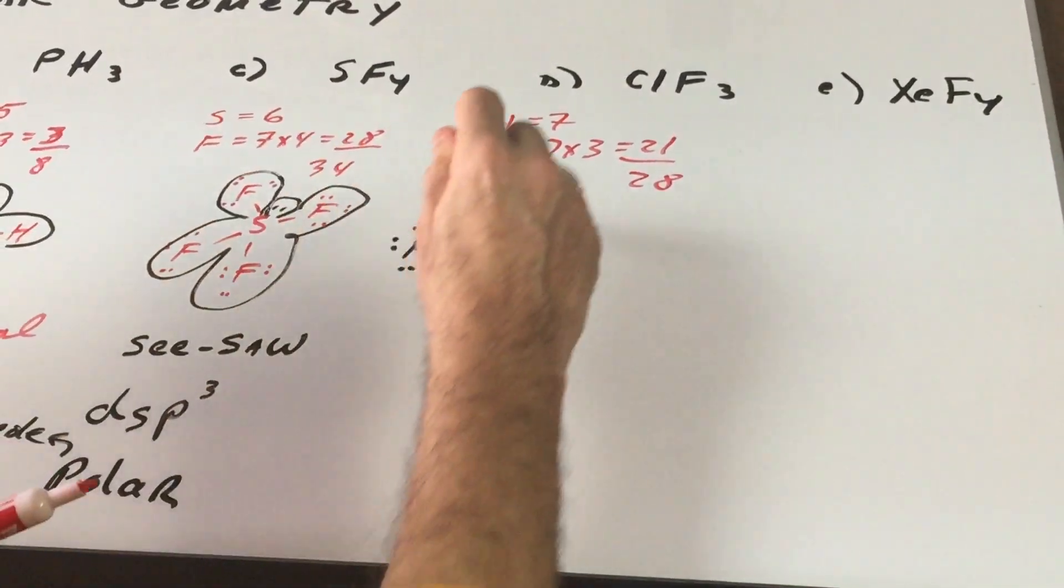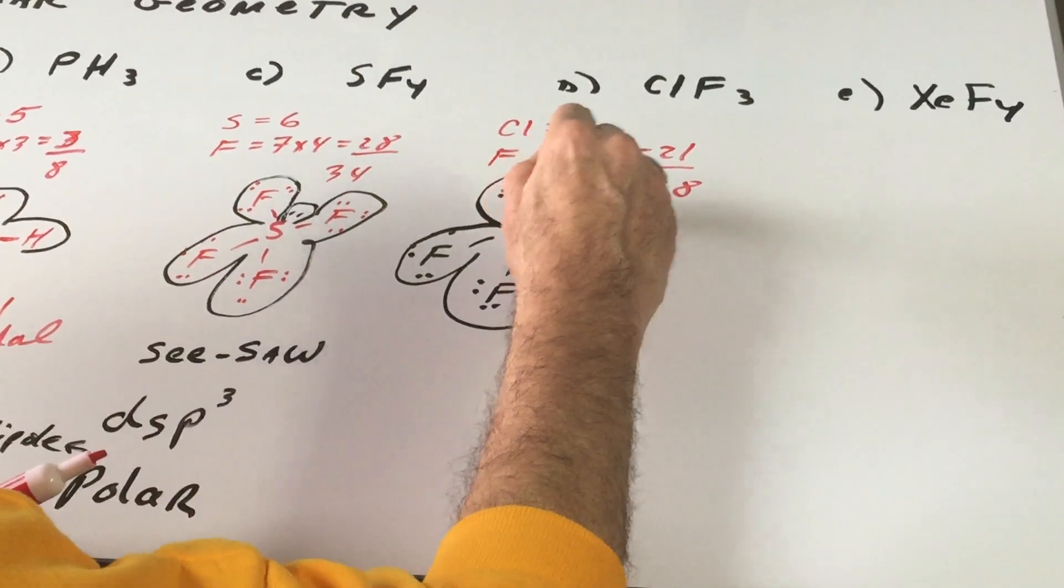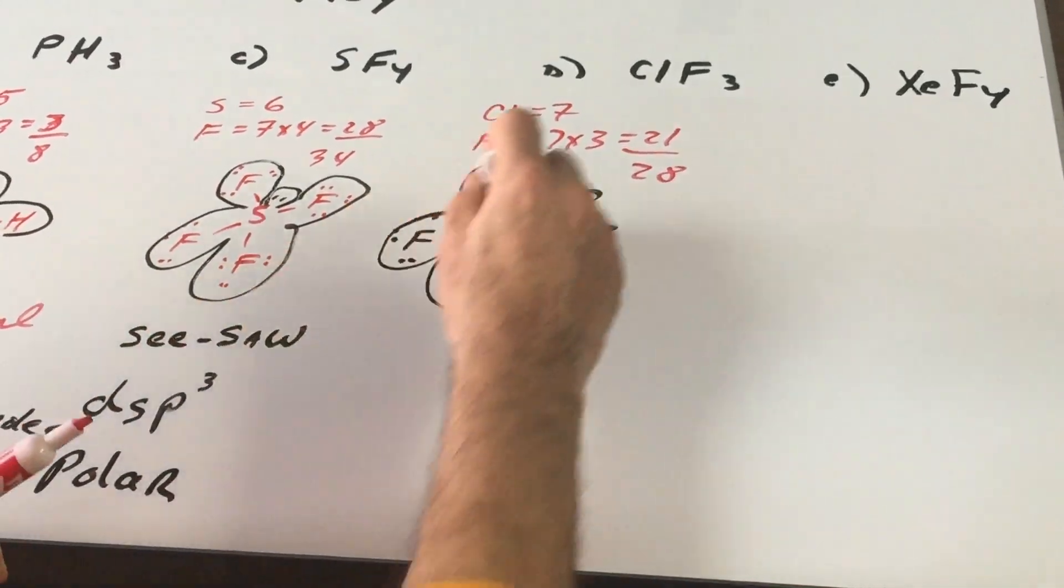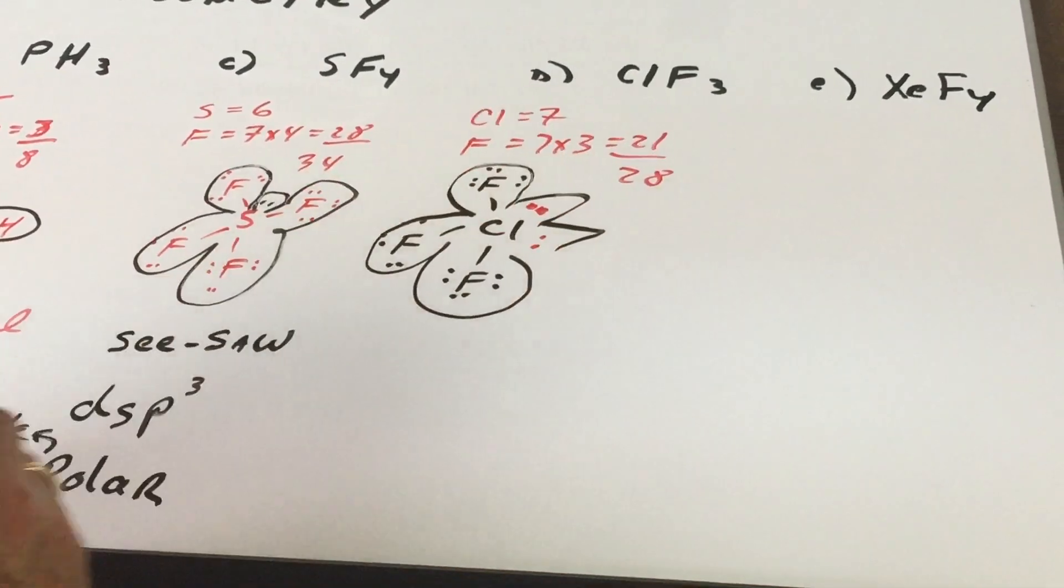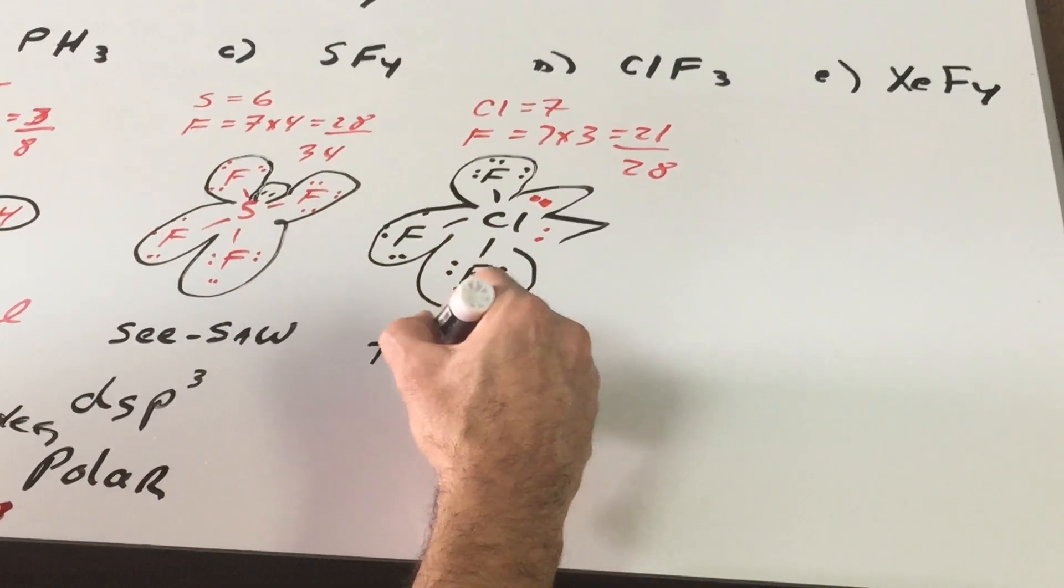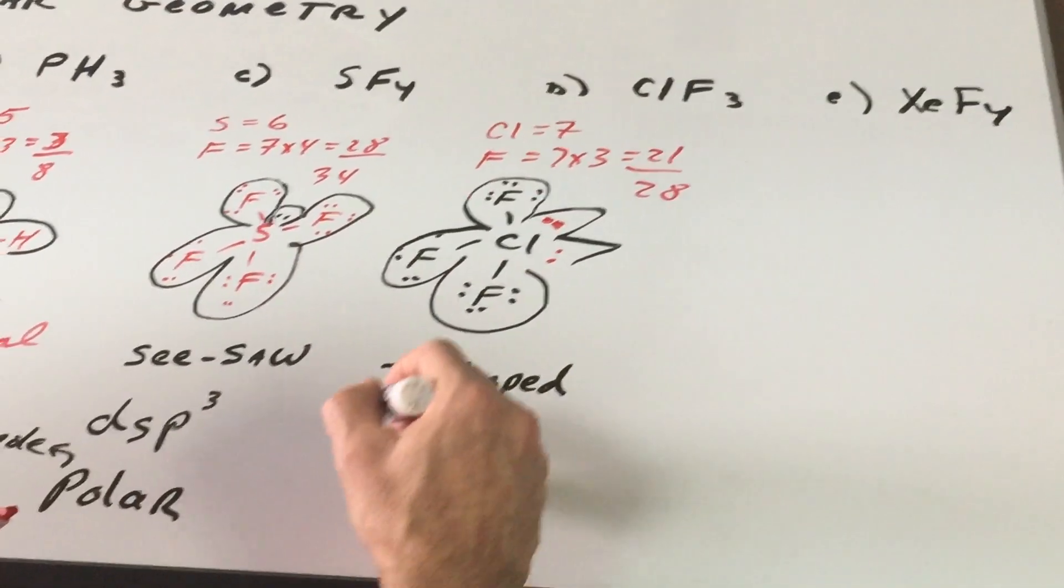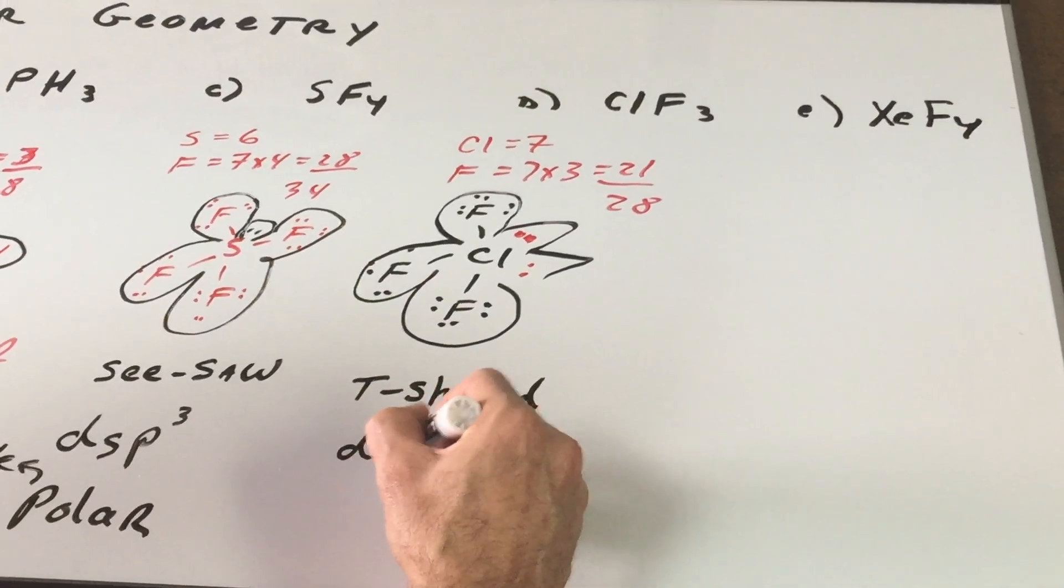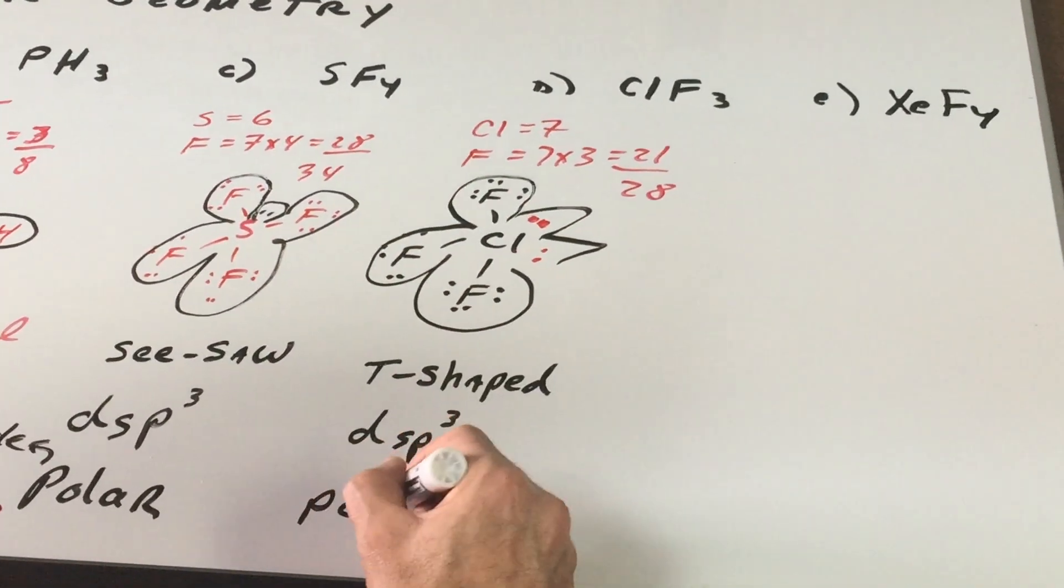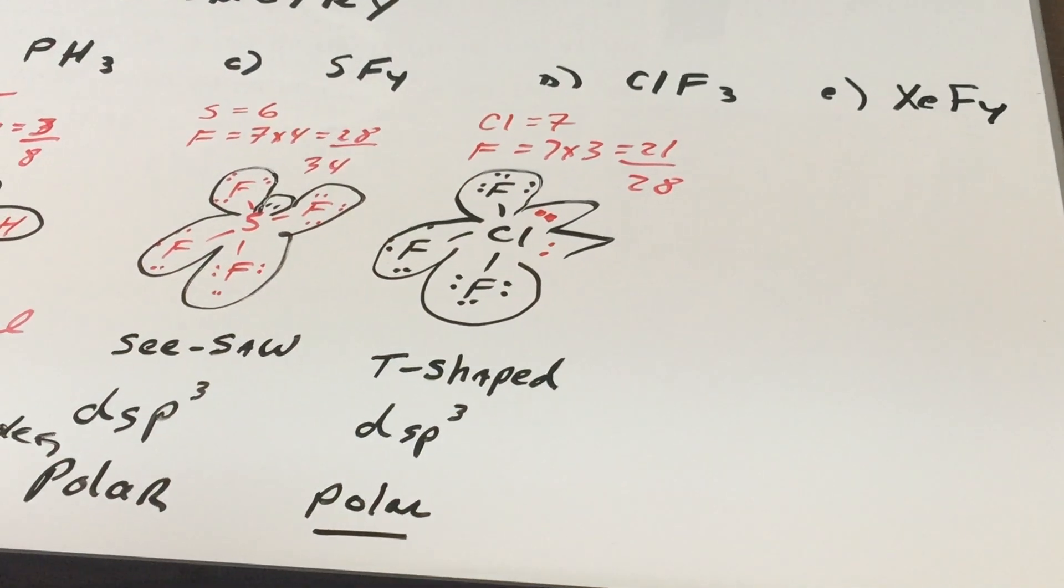And again, we see we have one area, two, three, four and five areas of space. One, two, three, four, five areas of space. We call this one, this is a hard one. This is T-shaped, the molecular geometry. Once again, the hybridization is dsp3. And we see these electrons that are unshared. This is polar and therefore would have a dipole.